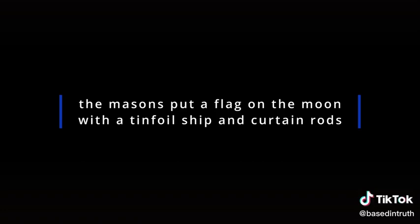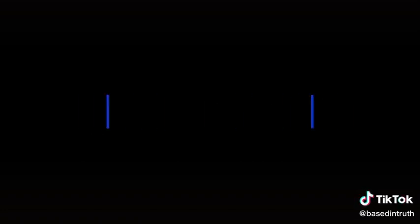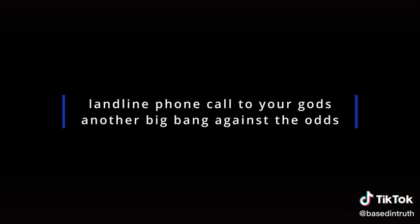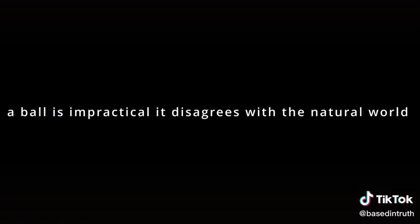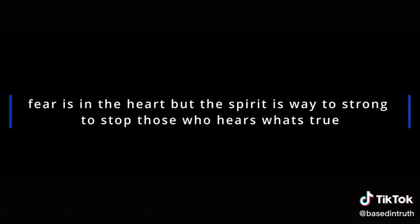Fictitious missions to the moon. The sun's path changes every June, like a clock or a fine-tuned balloon. The masons put a flag on the moon with a tinfoil ship and curtain rods, landline phone call to your gods. Another big banger guessed the odds, and a river flows downward over every pond. The ball isn't practical, it disagrees with the natural world. We can see way too far for a globe to be the truth, so don't believe the news. They'll just argue a mirage could make the view. Fear is in the heart, but the spirit is way too strong to stop those who hear what's true.